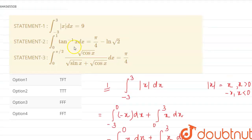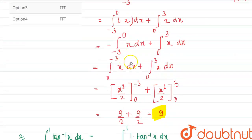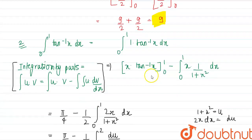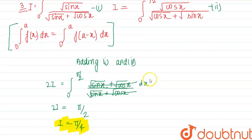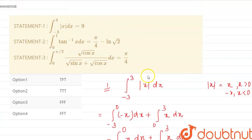The value of statement three is π/4, which matches the given statement. As you can see, all three statements are correct, so the answer — true, true, true — is correct. Thank you.